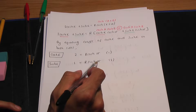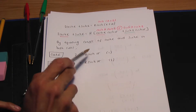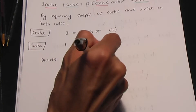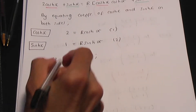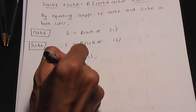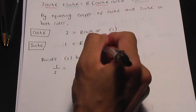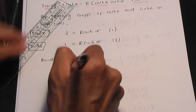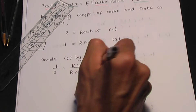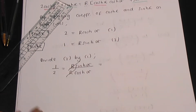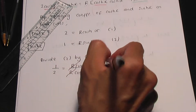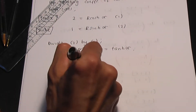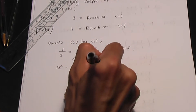From here, to work out alpha first, remember the idea: divide equation 2 by equation 1. Doing this, the left-hand side gives 1 over 2, and the right-hand side gives r hyperbolic sin alpha divided by r hyperbolic cos alpha. The r cancels, and hyperbolic sin over hyperbolic cos is hyperbolic tan alpha.